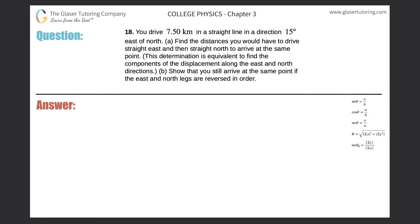Number 18: you drive 7.5 kilometers in a straight line in a direction of 15 degrees east of north. Find the distances you would have to drive straight east and then straight north to arrive at the same point.